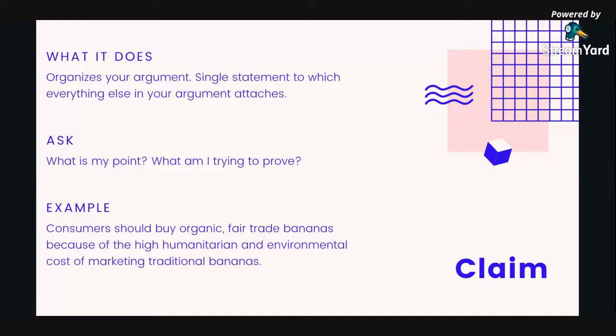Let's look at the first one: claim. What it does is organize your argument — it's a single statement where everything else in your argument attaches to it. When you're trying to figure out what your claim is, you need to ask: what's my point? What am I trying to prove? An example is: consumers should buy organic, fair trade bananas because of the high humanitarian and environmental cost of marketing traditional bananas. That is the claim — it's also a thesis.